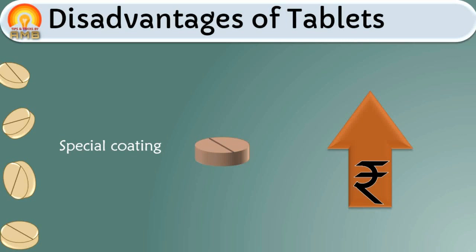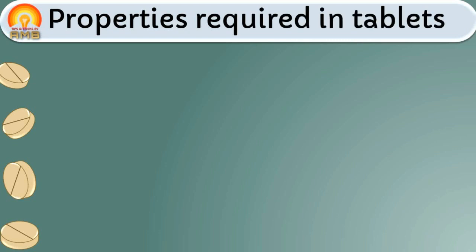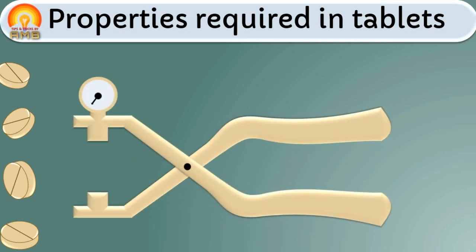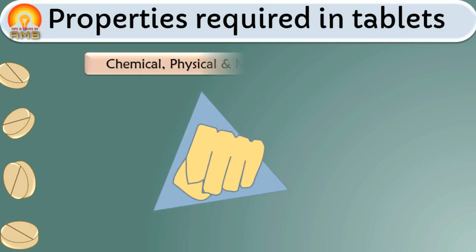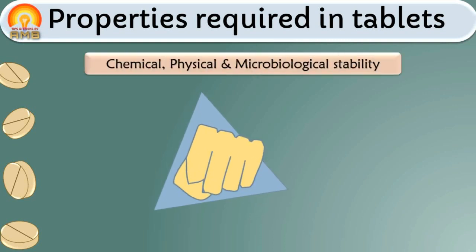Now let's discuss the properties required in an ideal tablet. The first property is that tablets should have the ability to withstand mechanical pressure during production, handling, and transportation — they should not break under such pressure. Tablets should also have chemical, physical, and microbiological stability during storage.